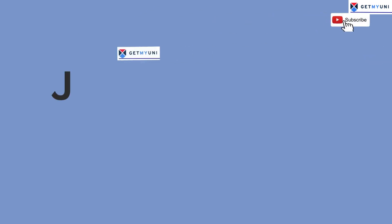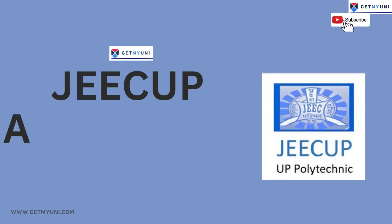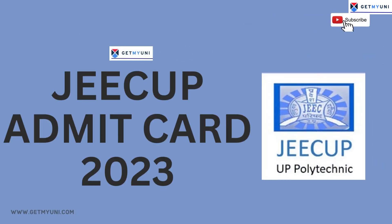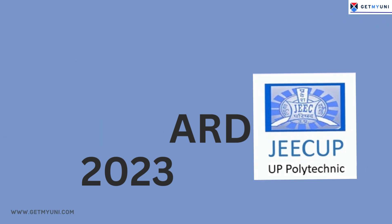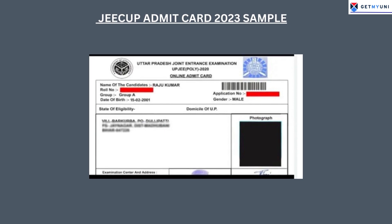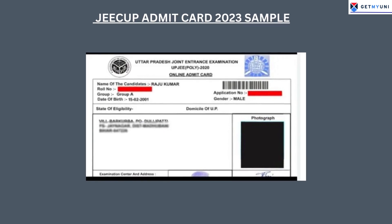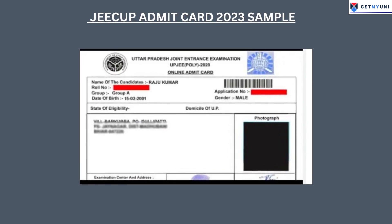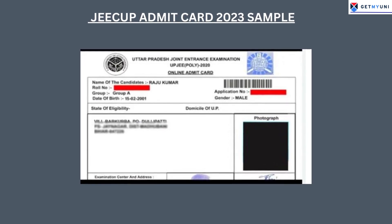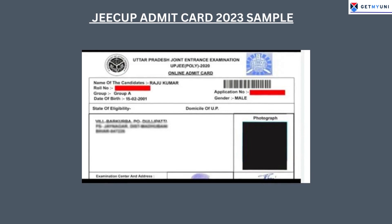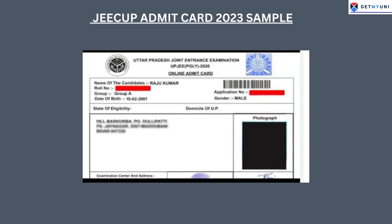JEECUP Admit Card 2023 will be published on the official website at jeecup.admissions.nic.in. JEECUP hall tickets will be issued to registered candidates on 28th June 2023. Candidates must follow the below given steps to download the JEECUP Polytechnic Admit Card conveniently.